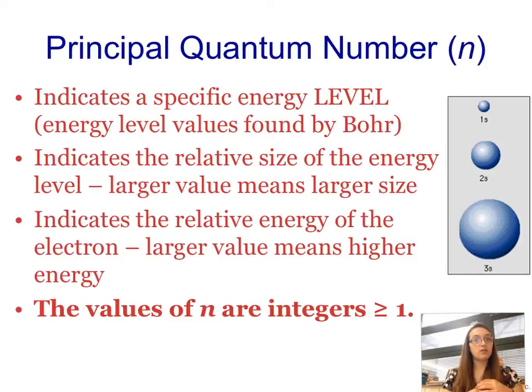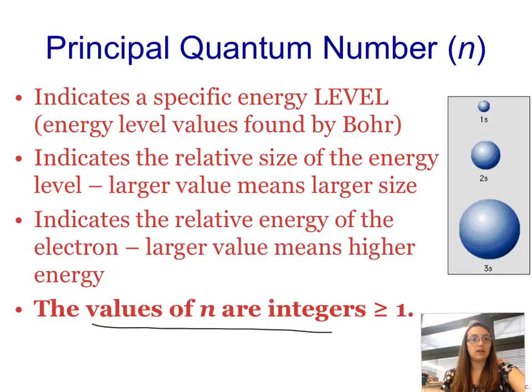The higher value of n also means that your electrons are much further from the nucleus. So this also will indicate the energy, because the larger value of n, the further from the nucleus you are, the higher the energy. So the values of n, and this is important, the values of n are anything one or greater. They have to be integers, it can't be 1.5. It'll be 1, 2, 3, 4, so on.